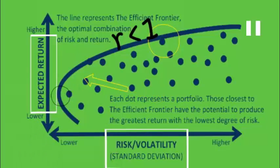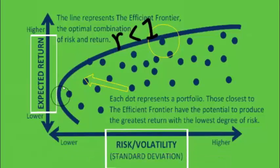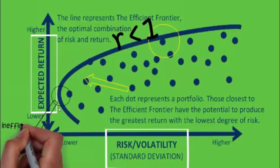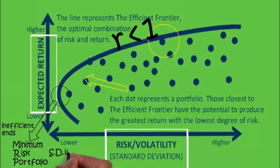The starting point of the efficient frontier — or the end of the inefficient frontier — is known as the minimum risk portfolio or minimum variance portfolio. This is the point where the standard deviation is at its lowest.